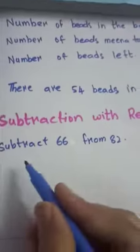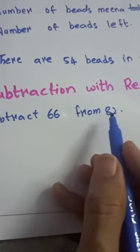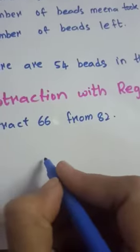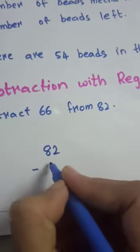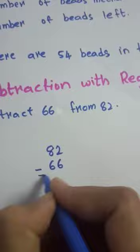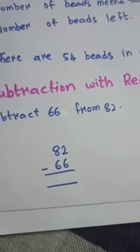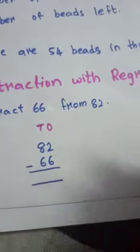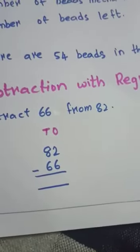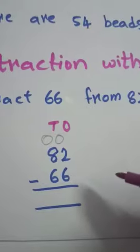Now, we have to subtract 66 from 82. 82 minus 66. Ones. Tens. Now, see here, children.